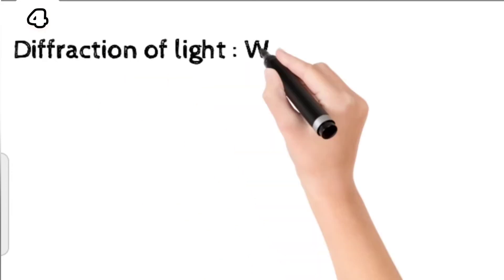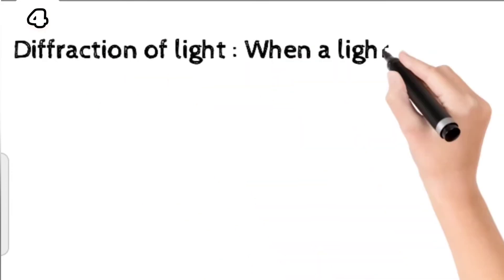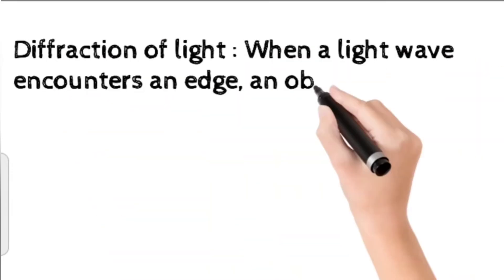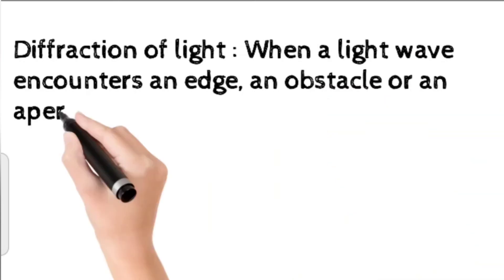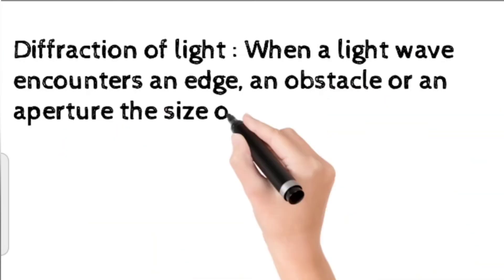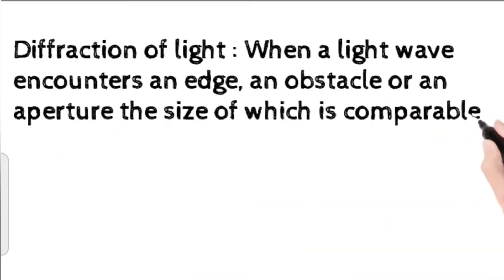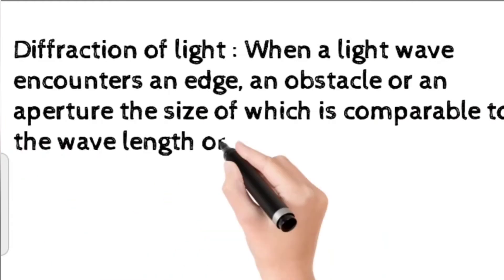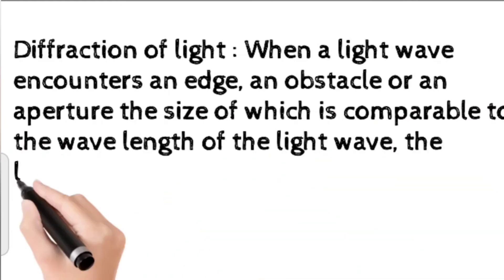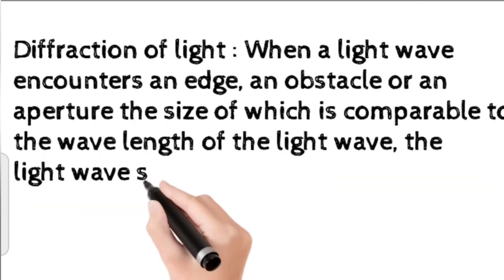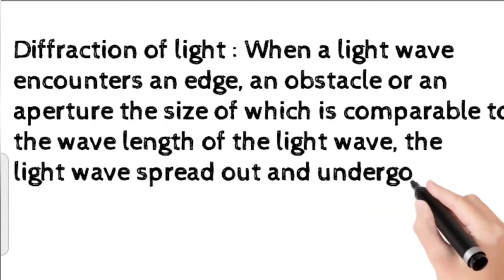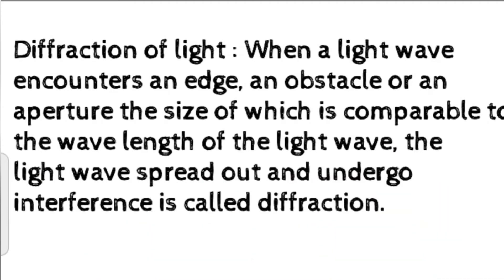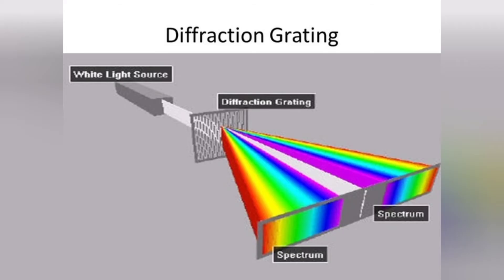4. Diffraction of light. When a light wave encounters an edge, an obstacle, or an aperture the size of which is comparable to the wavelength of the light wave, the light wave spreads out and undergoes interference. This is called diffraction.